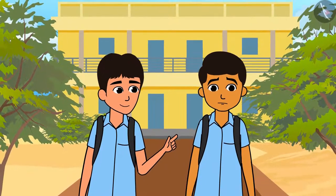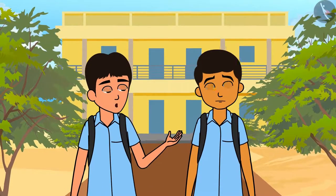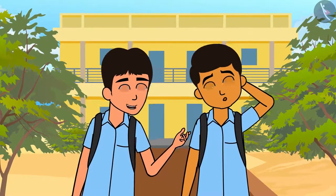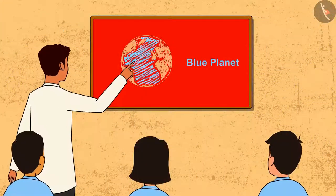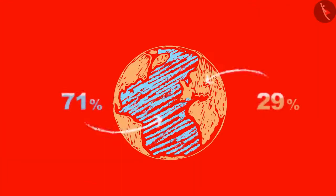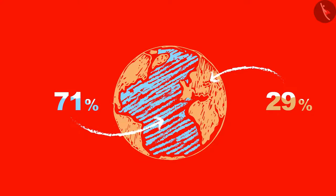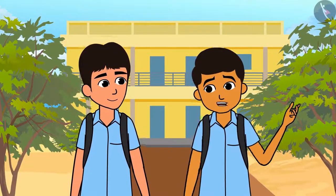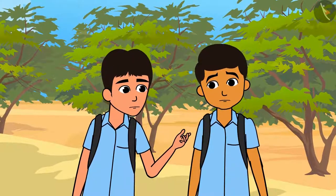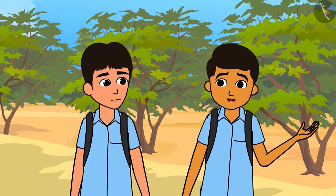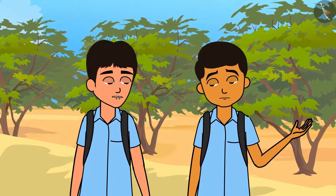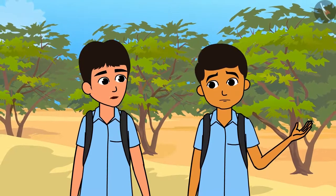Bhovan, you are looking confused. Yes Arjun, I'm thinking about something. What are you thinking? If you remember, today in geography class, Master ji told us that the earth is also called a blue planet because 71 percent of the earth's surface is covered with water, and that is why it appears blue when seen from space. The rest 29 percent of it is land. If 71 percent of the earth's surface is covered with water, then how can there be a shortage of water?